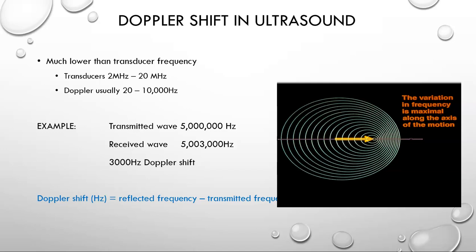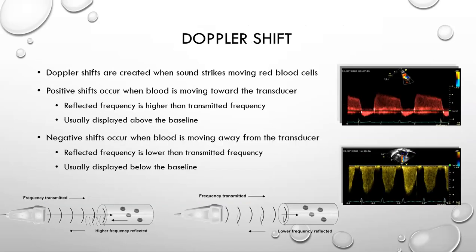For example, a transmitted wave might be a 5 MHz signal. The received wave will be only a small percentage changed — say, 5,003,000 Hz — and so the Doppler shift would then be 3,000 Hz. The Doppler shift equals the reflected frequency minus the transmitted frequency. Doppler shifts are created when sound strikes moving blood cells. Positive shifts occur when the blood is moving toward the transducer, and negative shifts occur when the blood is moving away from the transducer.